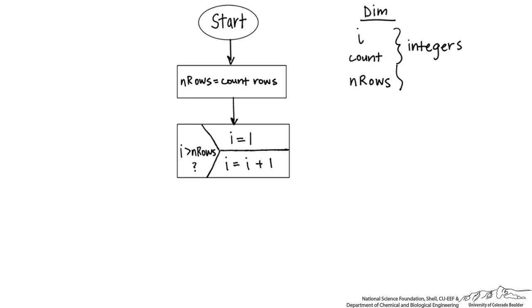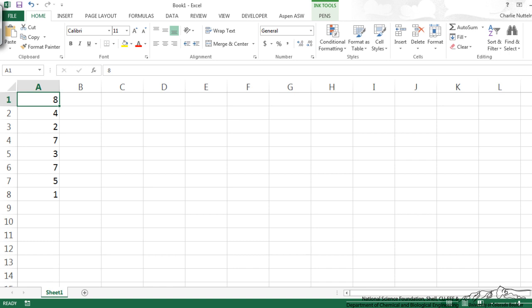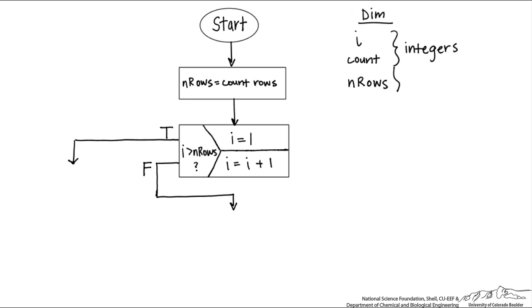If i exceeds the number of rows, then we are done. If not, we go into a fixed iteration and do something in the for-next loop. We are checking whether each cell's value equals 5. If it does, we increment count — a running tally of all the 5's. So if the cell value equals 5, we increment count by 1; otherwise we do nothing. This takes the form of a one-way if-then.